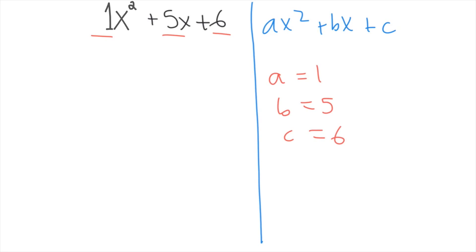Next, you need to multiply a with c, so we multiply 1 and 6 to get that ac is equal to 6. We are going to write this down beside the fact that b is equal to 5. Now you need to look for two numbers which multiply together to give ac, which is 6, and add together to give b, which is 5.